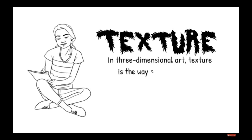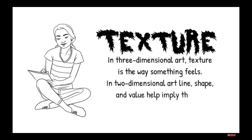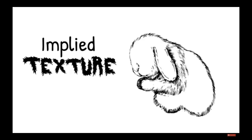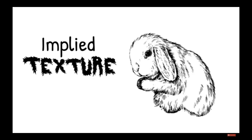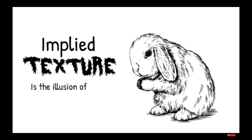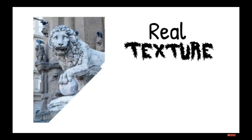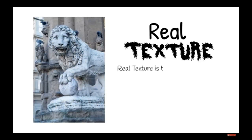Texture. In three-dimensional art, texture is the way something feels. In two-dimensional art, line, shape, and value help imply the way the objects feel. Implied texture is the illusion of having physical texture.